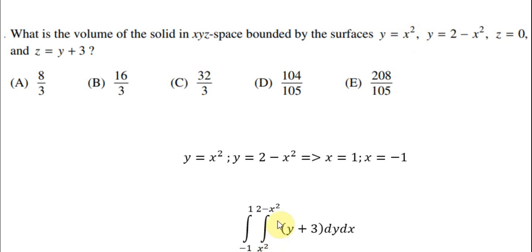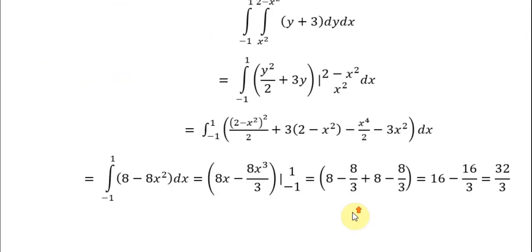That's why we have the second interval here. And for z we have y plus 3 we put in here. We calculate and we got about 32 over 3.